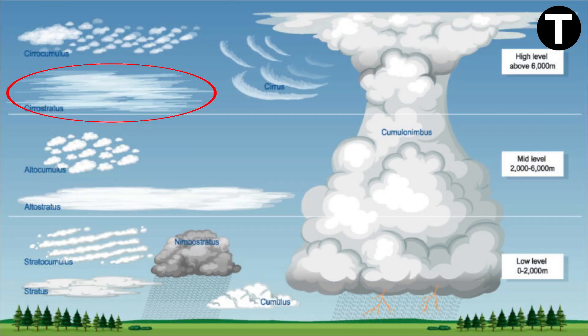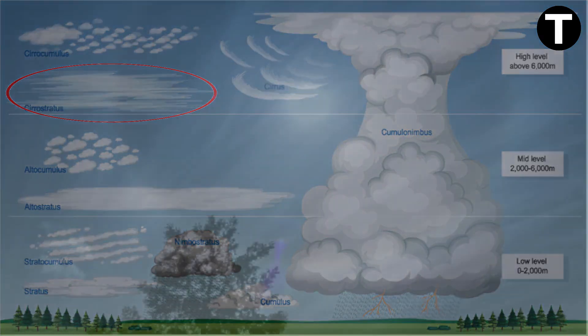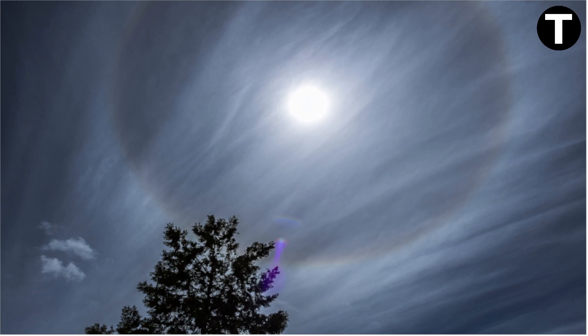Next up, cirrostratus clouds. These translucent, whitish veils are made of ice crystals. They often accompany a halo phenomenon and are harbingers of upcoming depressions.